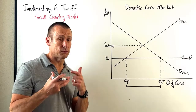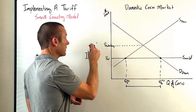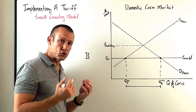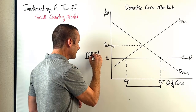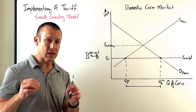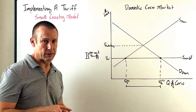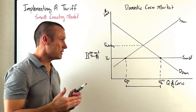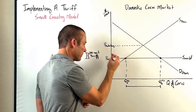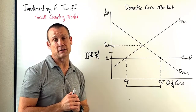This country decides to protect producers by implementing a tariff — a per unit tariff, maybe per bushel of corn. This vertical distance represents the per unit tariff. It's important to realize a tariff is a tax on imports, not on domestically produced goods. Because this is a small country, foreign producers are going to pass the entire burden of the tariff onto the consumer — meaning we move the full tariff amount up from price world.